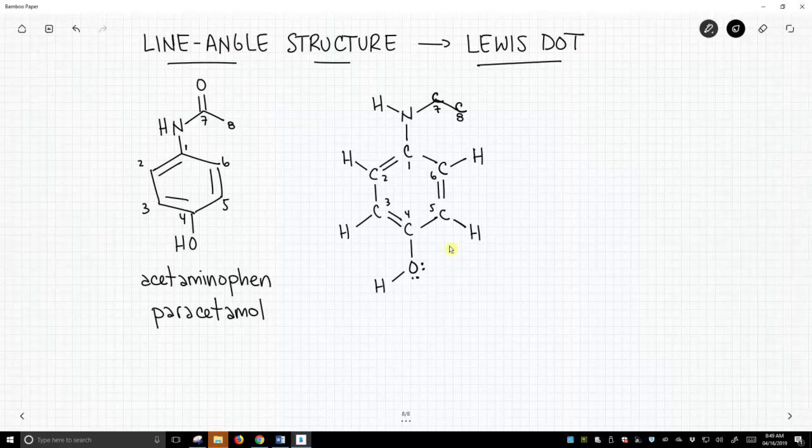So carbon seven has two bonds to an oxygen. That completes all four bonds to that carbon. And carbon eight only has one bond shown to it in the line-angle structure, so it must have three other bonds. Those are to hydrogens. So let's draw them in.